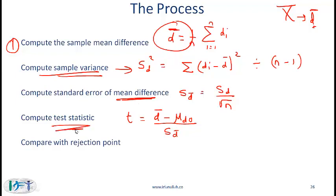Then compute the test statistic, which is d-bar minus the hypothesized value divided by the standard error — again analogous to what you have seen before. Then compare with the rejection points from the t-table based on the level of significance, and finally accept or reject based on that comparison. This process is exactly the same as what you've seen earlier, so as long as you understand the terminology you are in good shape.